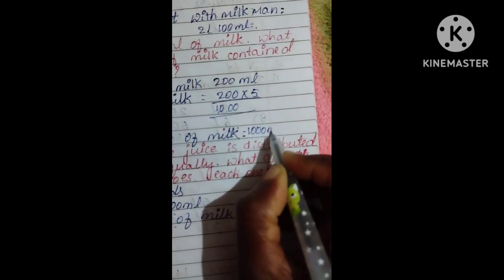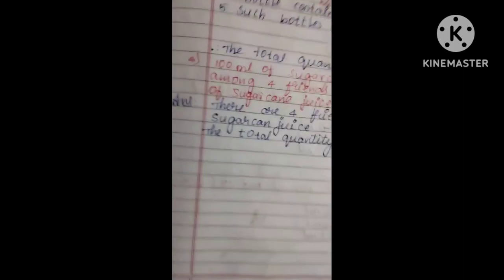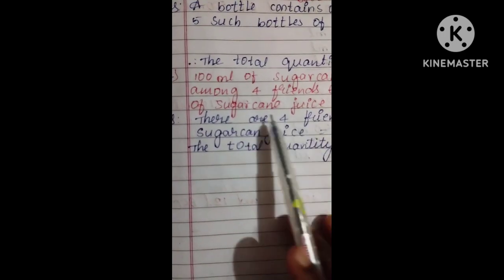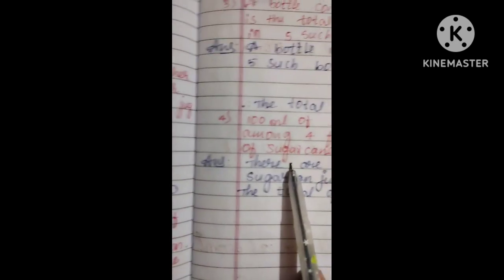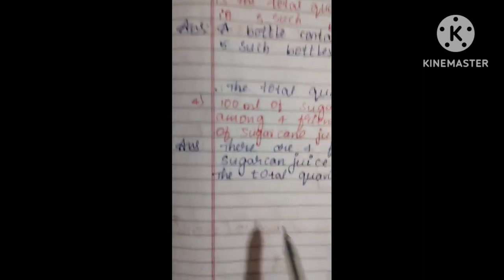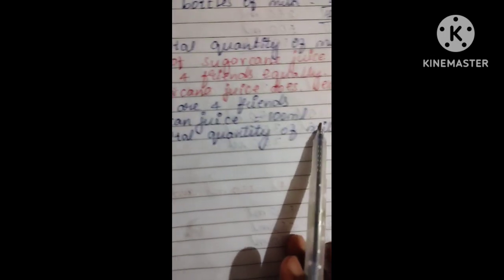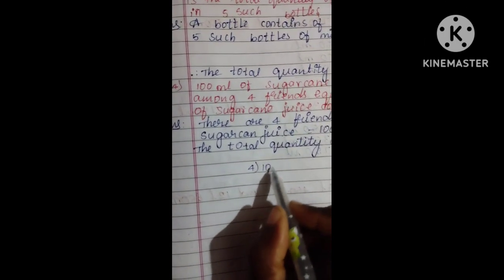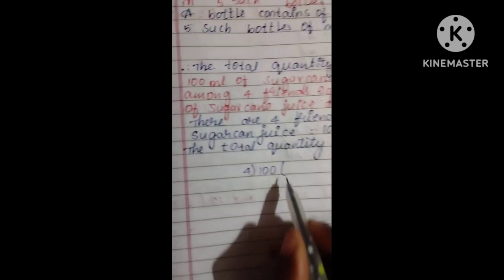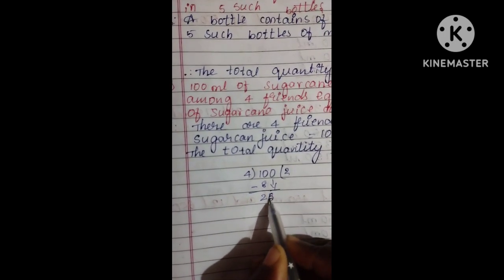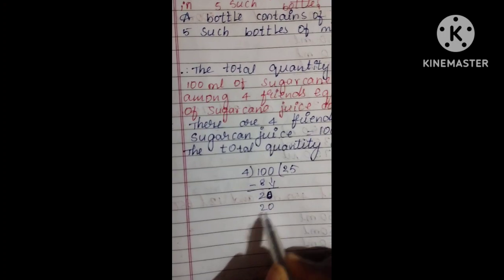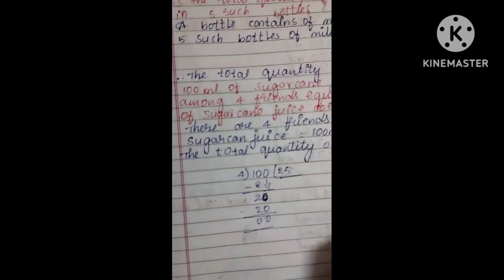Next, 100 ml of sugarcane juice is distributed among four friends equally. What is the sugarcane juice each one gets? Total quantity is 400 ml. Now 400 divided by 4 equals 100. Each one gets 25 ml.